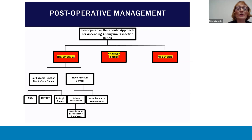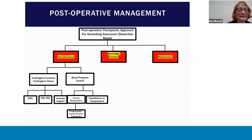Consideration should be given for volume resuscitation, especially if the patient is bleeding. The patient may arrive from the operating room hypothermic due to circulatory arrest and therefore should be warmed to normothermia. If the patient has a coagulopathy, appropriate coagulation labs should be obtained and coagulation factors replaced. In concordance with the surgeon and the patient's intraoperative course, blood pressure stabilization can be maintained either with a vasodilator or vasopressors.